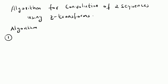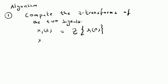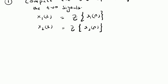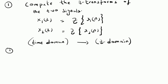The first step is we have to compute the Z-transforms of the two signals. Given the signal x1[n], you have to compute or evaluate X1(z), which is the Z-transform of x1[n], and X2(z) will be the Z-transform of x2[n]. That means we are shifting from time domain to Z-domain.